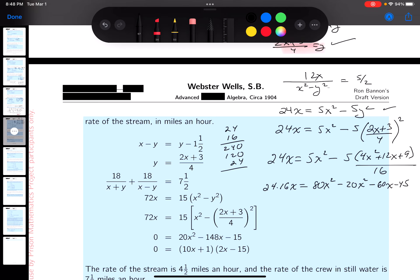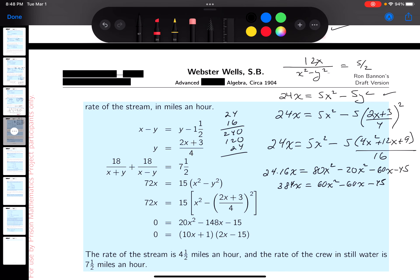So 384 equals 60X squared minus 60X minus 45. It looks tough. Now we get 0 equals 60X squared minus 444X minus 45.